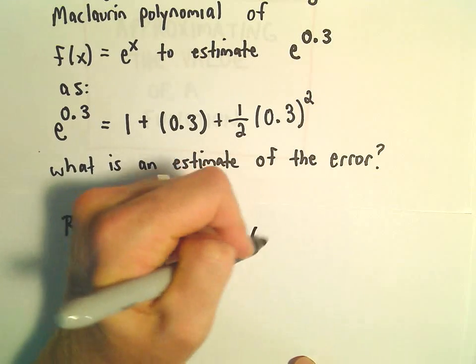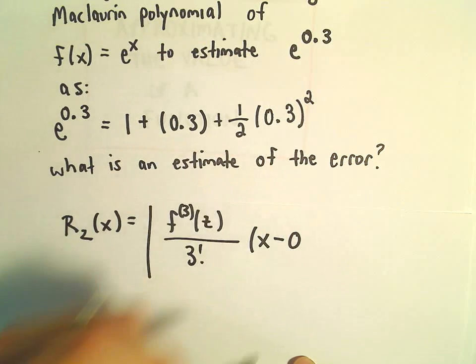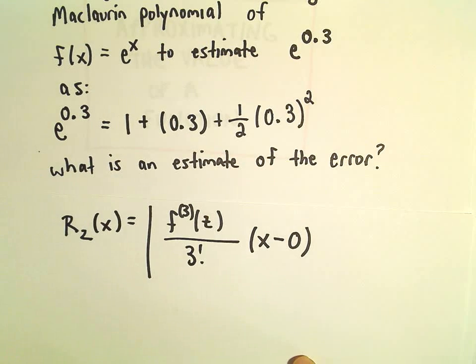And then we've got our expression x minus c. In this case, since it's a Maclaurin polynomial, we can just plug in our c value of 0, and that's going to be cubed.